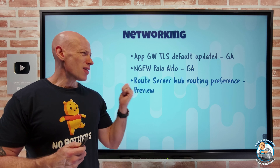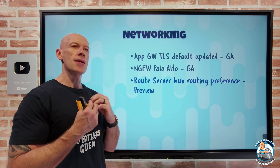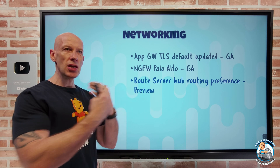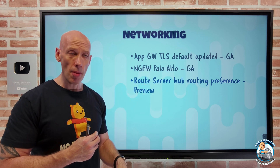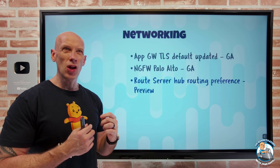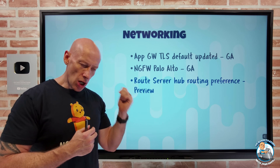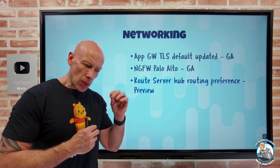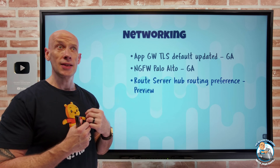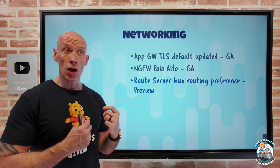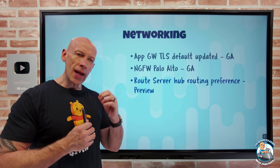Route Server now has the hub routing preference. Route Server is all about learning BGP routes from other NVAs in my environment, rather than having to rely on user-defined routes. But what if in a branch-to-branch scenario I learn multiple routes across ExpressRoute, across Site-to-Site VPN, and across maybe some other SD-WAN solution — and I want to be able to customise the preference for that?